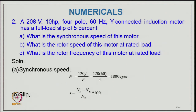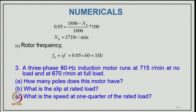Numerical Example 2: A 208 V, 7.5 hp, 4-pole, 60 Hz, star-connected induction motor has a full load slip of 5%. Synchronous speed: Ns = 120×60/4 = 1800 RPM. Rotor speed at rated load: Nr = 1800×(1 − 0.05) = 1710 RPM. Rotor frequency at rated load: fr = s×f = 0.05×60 = 3 Hz.